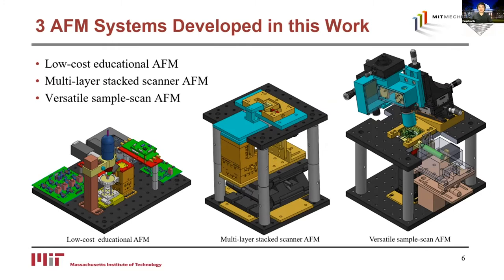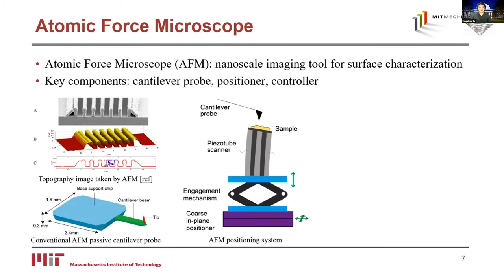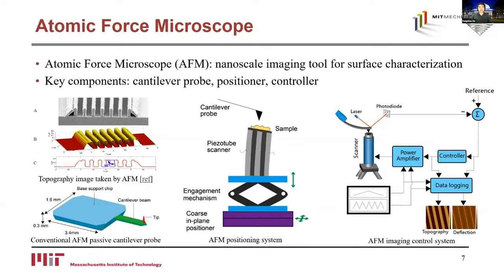We'll begin with a brief overview of atomic force microscopes for audiences not very familiar with this instrument. AFM is a nanoscale topography imaging tool for surface characterization. In its basic form, it creates a 3D topography image of a sample surface with sub-nanometer resolution. The key components of an AFM include a cantilever probe, a nano-positioning system with a coarse engagement part and a high-resolution scanner, and an imaging control system. An AFM scans the micro-cantilever over the sample surface to measure various quantities from the probe-sample interaction.